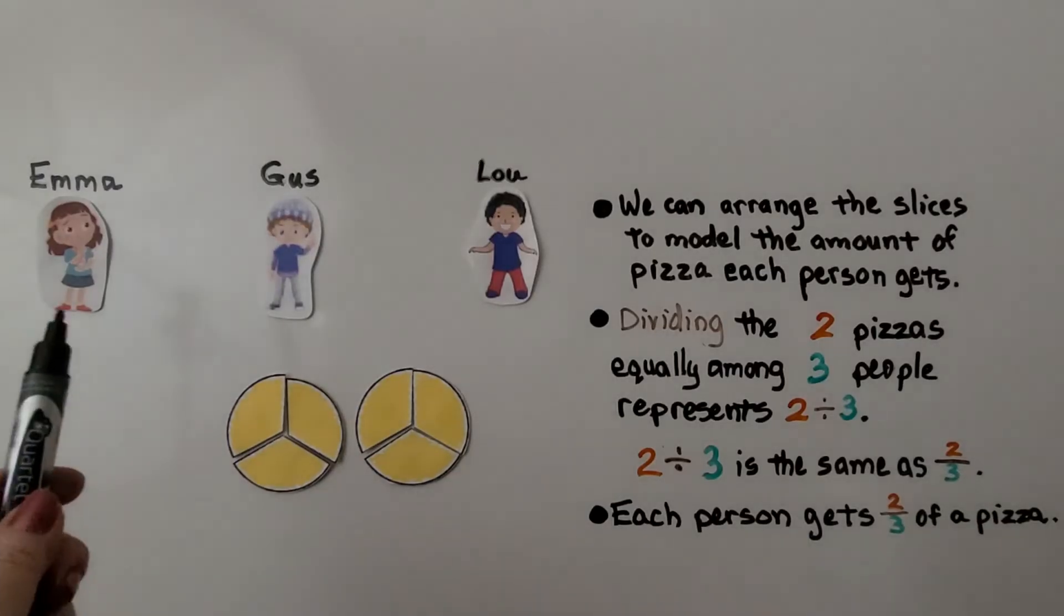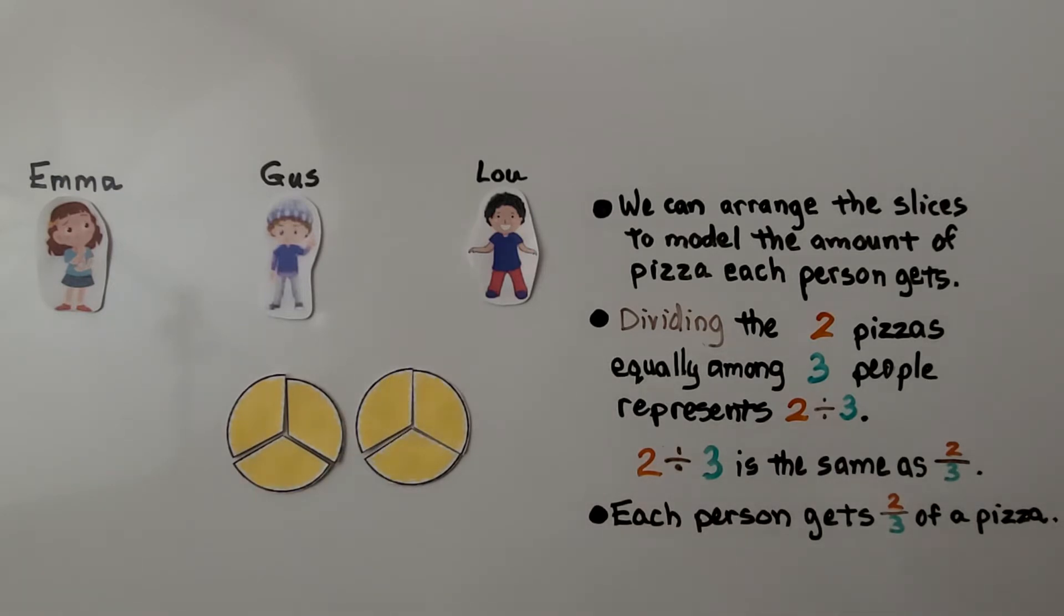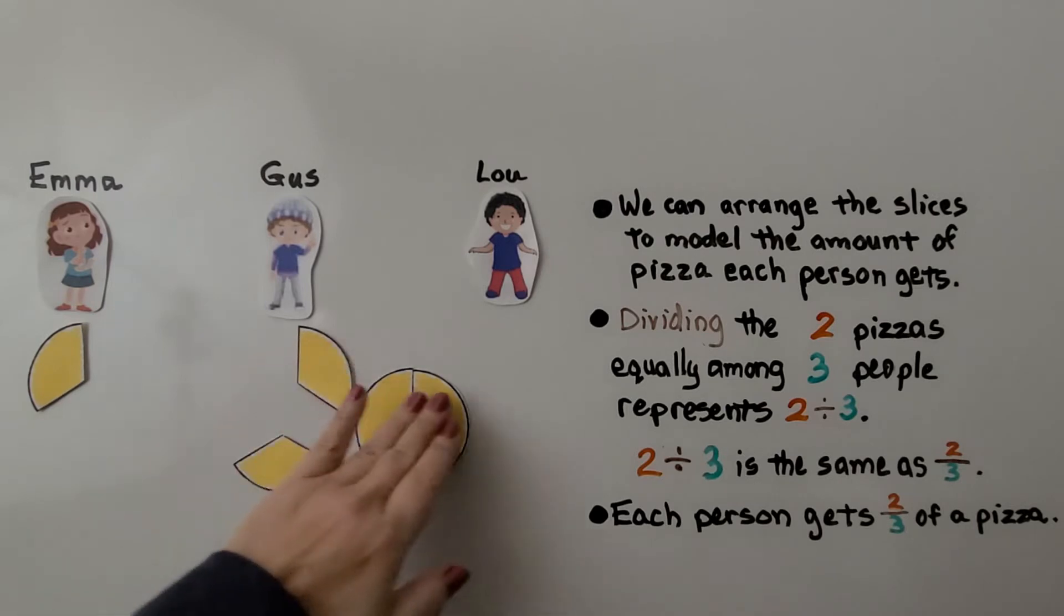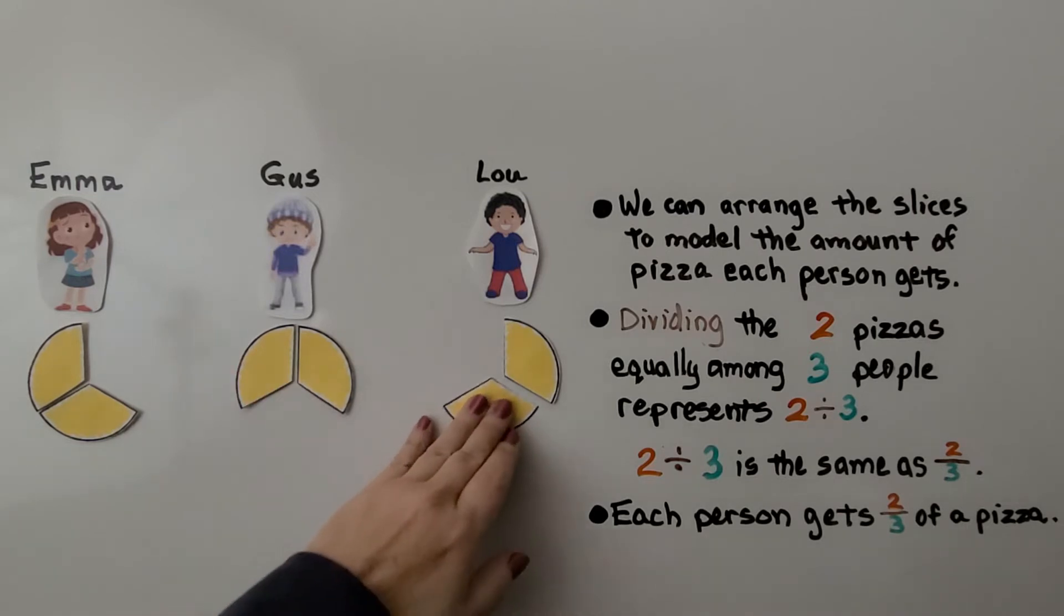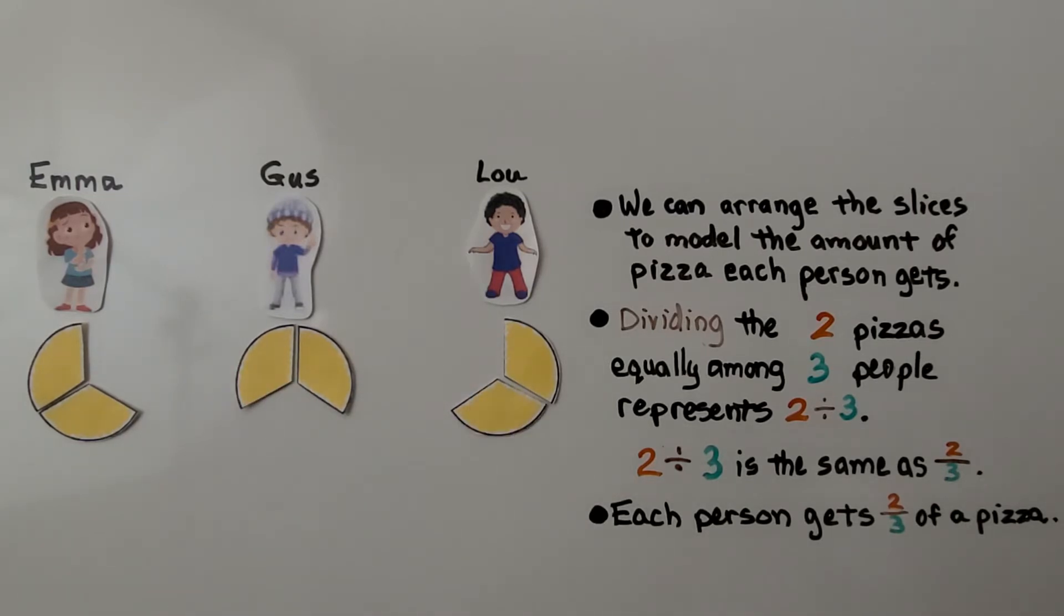So here we have the three friends, Emma, Gus, and Lou. And we can arrange the slices to model the amount of pizza each person gets. Dividing the two pizzas equally among three people represents two divided by three. And two divided by three is the same as two thirds. If we give them each one, we can give them a second piece. Each person gets two thirds of a pizza. Two divided by three is the same as two thirds.